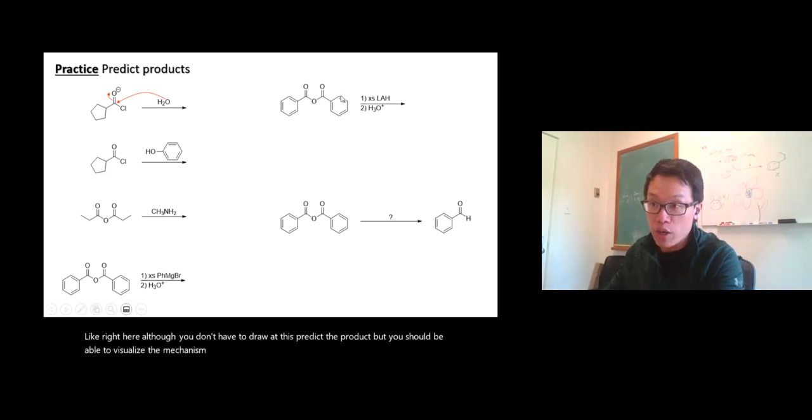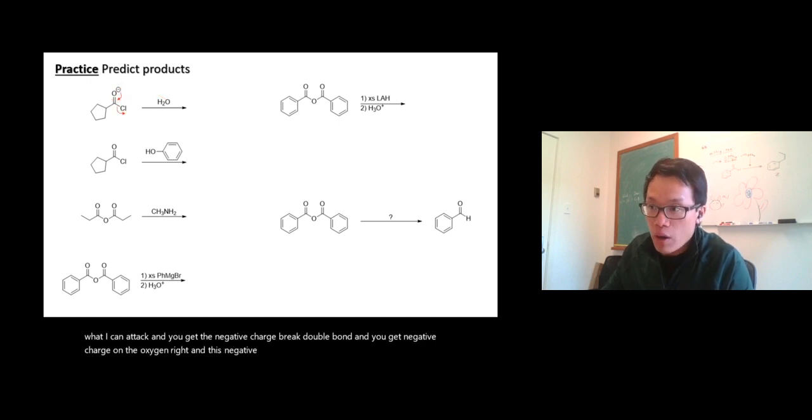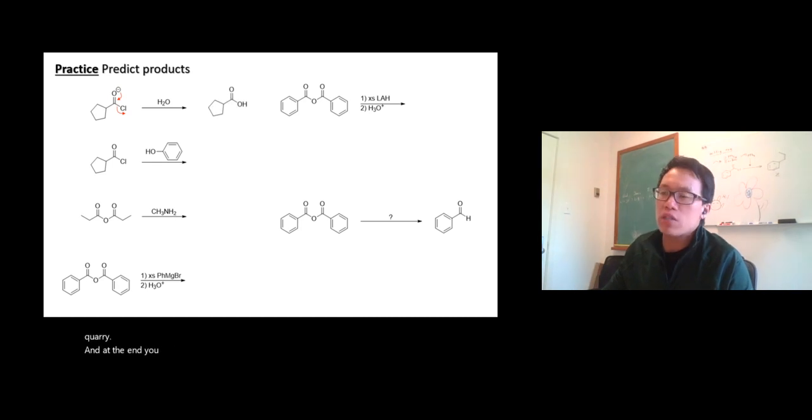But you should be able to visualize the mechanism. For example, this is what I want you to be able to visualize: water can attack and you get the negative charge. Break double bond and you get negative charge on the oxygen. And this negative charge will reform the double bond, kick out the chlorine. And at the end you get water on it. Of course there's deprotonation later, but yeah, that's what you get.